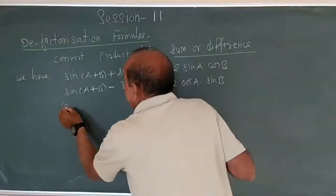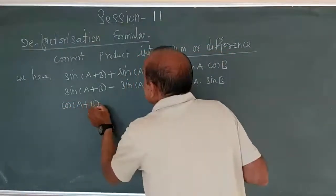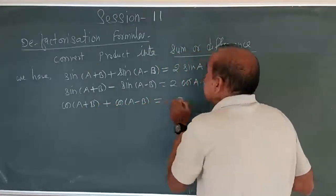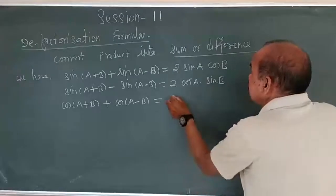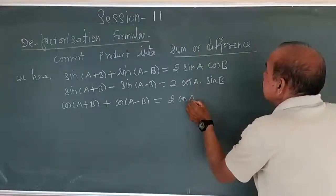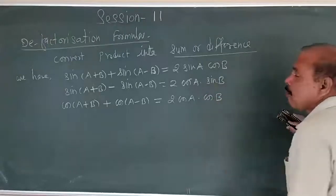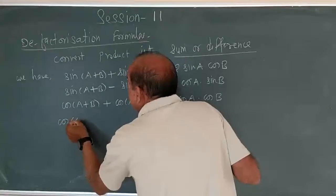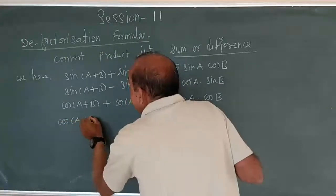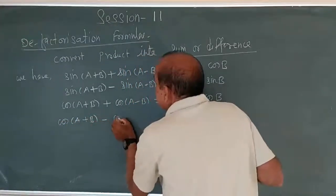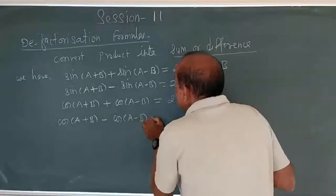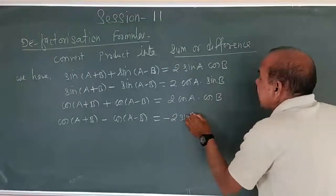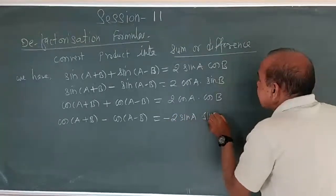Third formula: cos A plus B plus cos A minus B equals 2 times cos A into cos B. And the fourth: cos of A plus B minus cos of A minus B equals minus 2 times sin A sin B.